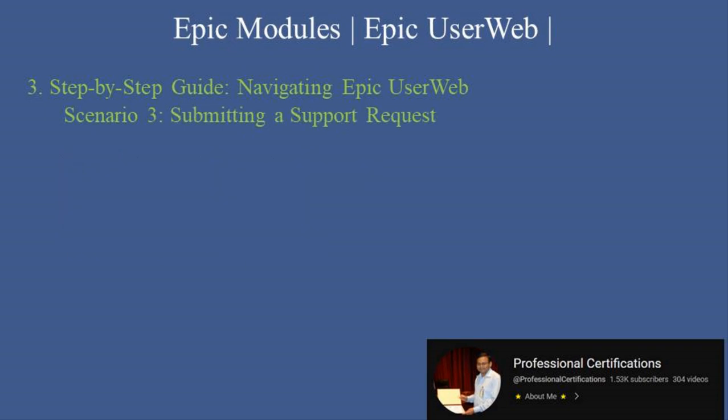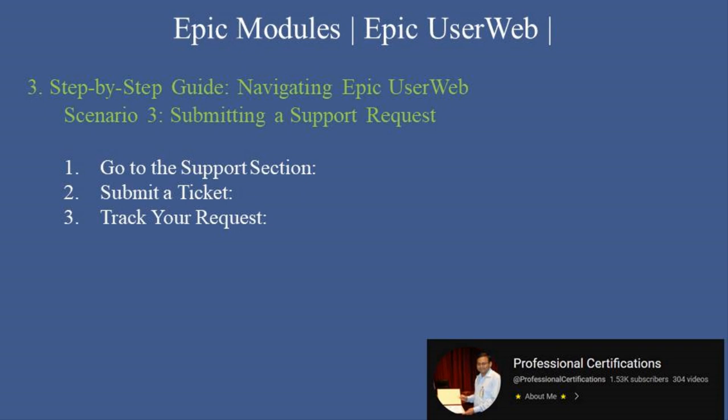Scenario 3 — Submitting a Support Request. First, go to the Support section and click on Support in the menu to access troubleshooting tools and ticketing options. Second, submit a ticket by filling out the form with details about your issue, including screenshots or error messages if applicable. Third, track your request by monitoring the status of your ticket and communicating with support staff directly through the portal. Fourth, access troubleshooting guides to resolve common issues while waiting for support.